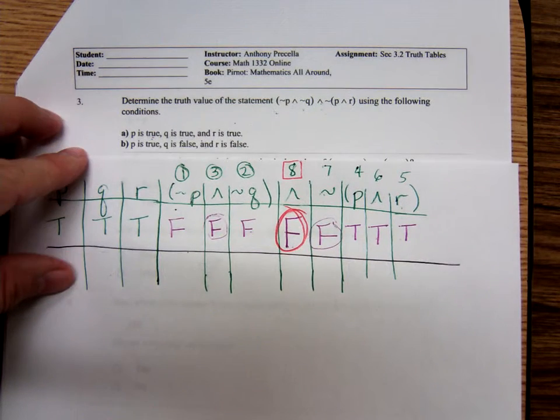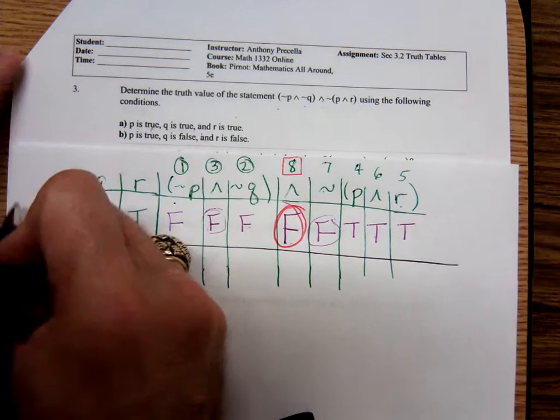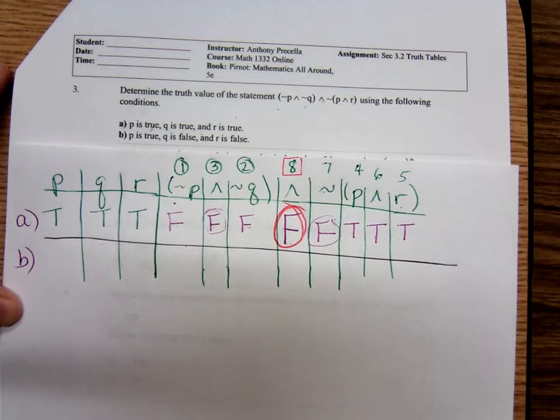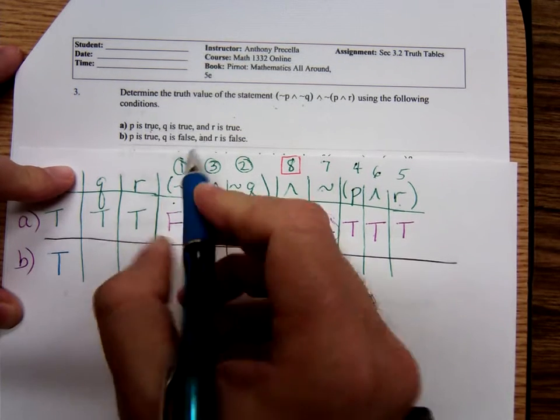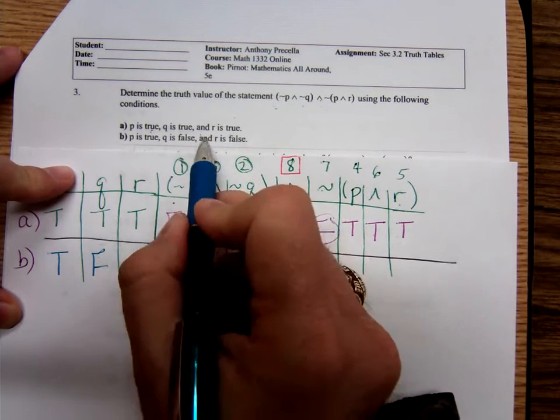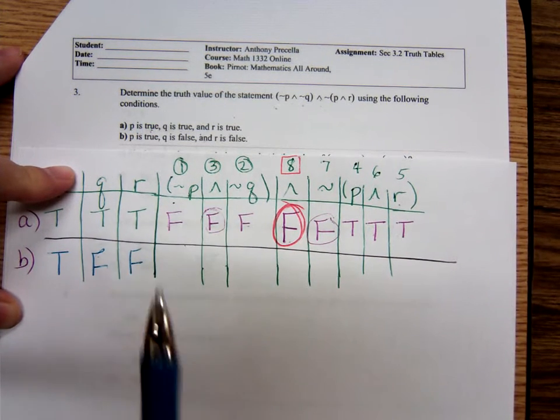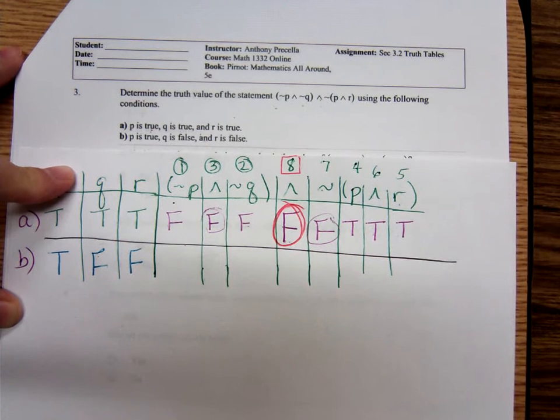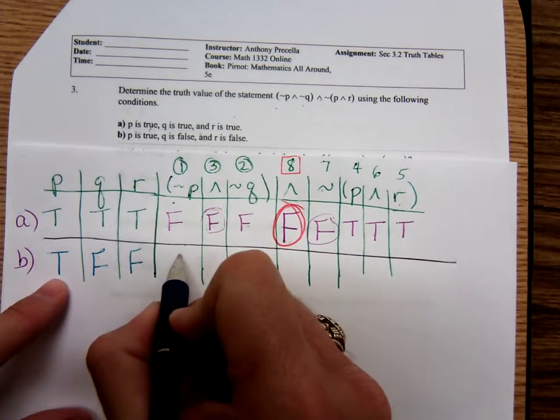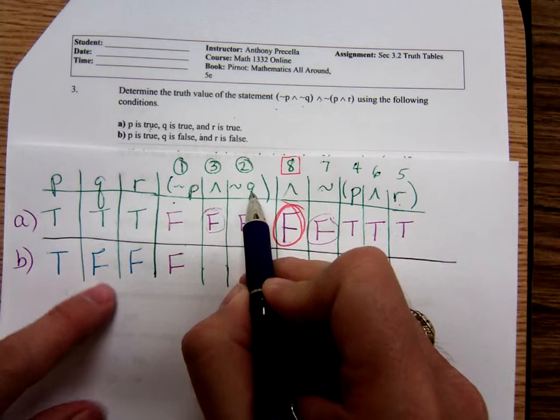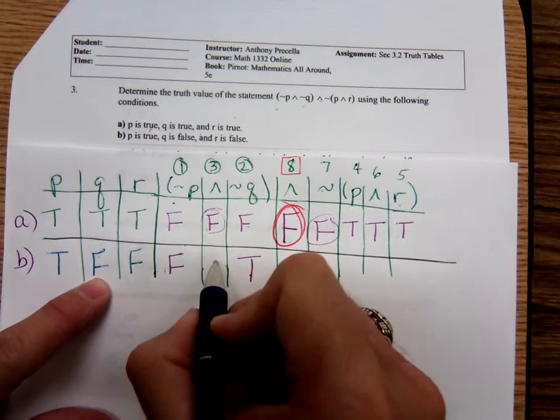Now we'll do the next one. See there's two parts here, part A and part B. This was the line for part A. Now here's the line for part B. Part B says P is true, Q is false, R is also false. So true, false, false. Going in that same order, not P would be false. Not Q would be true. False and true is false.